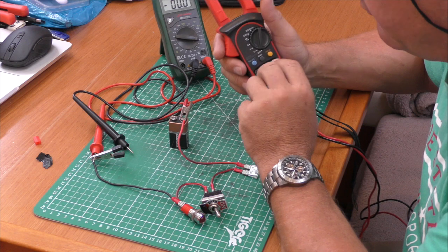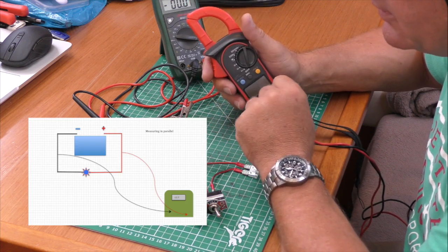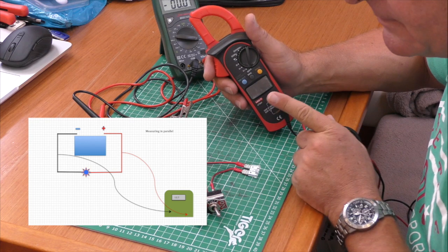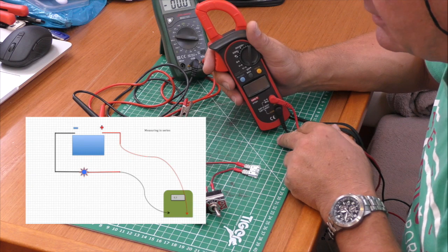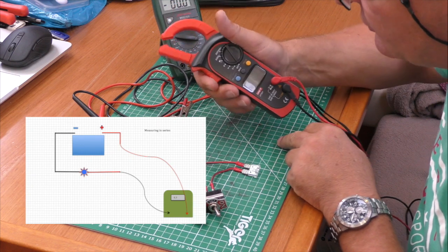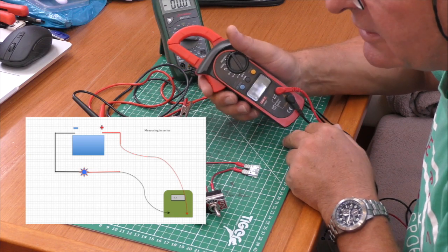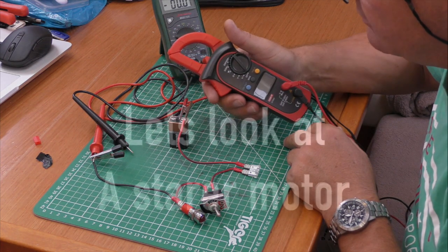So just to recap, voltage is measured in parallel as per this diagram and amperage is measured in series with your meter in series unless you have an AC or DC clamp meter where they measure by inductive force.